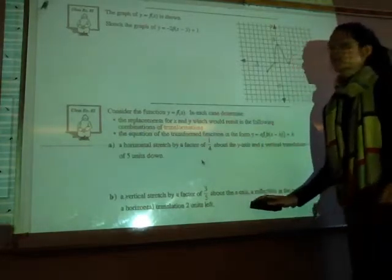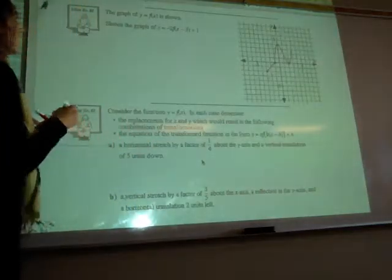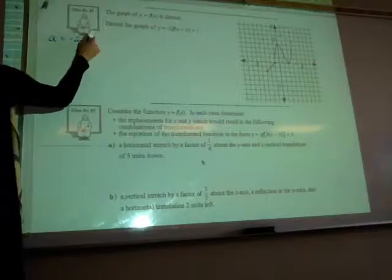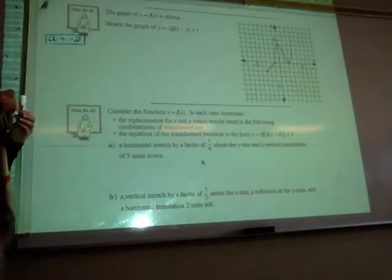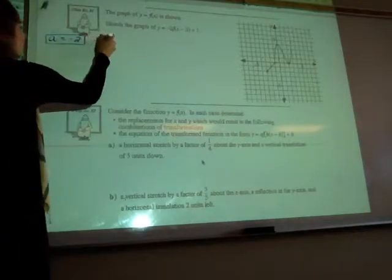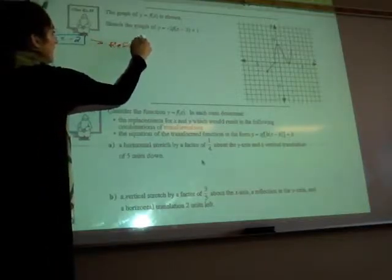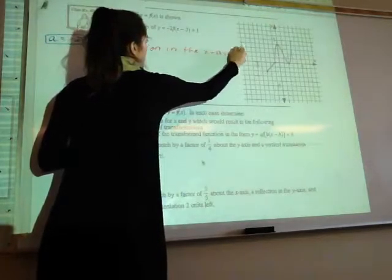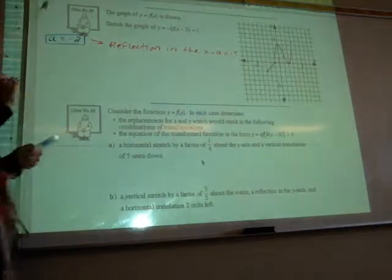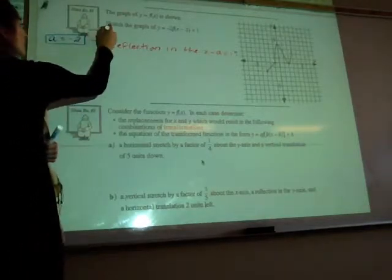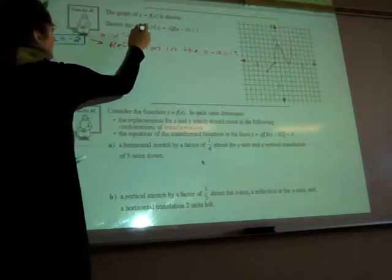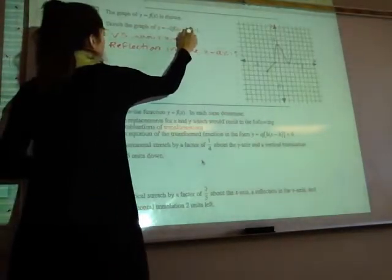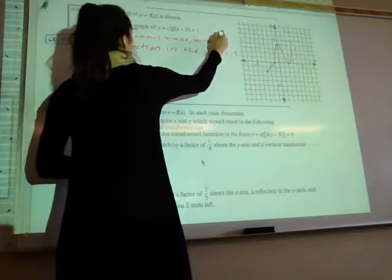So let's talk about the transformations before we try and draw this. Okay, what's our a value? Negative 2. So that means there's two things happening there. The negative tells you what? Reflection. In what? X axis. Good, a reflection in the x axis. What does the 2 tell you? Stretch. Vertical stretch. And that's about the x axis. Factor of 2.